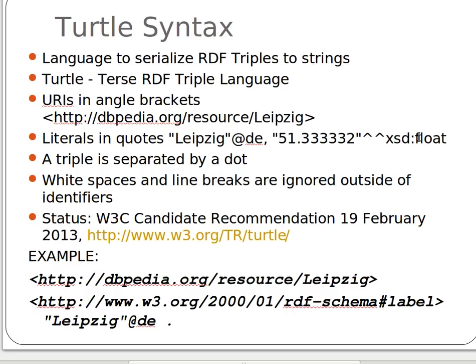Triples, whenever we have a group or set of triples, are usually separated by a dot. Remember that — triples are usually separated by a dot.